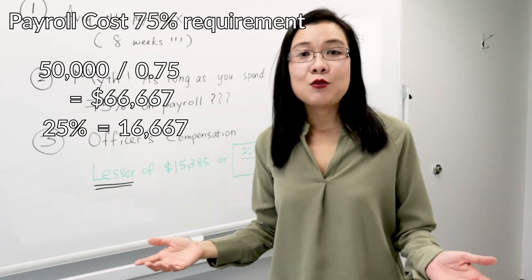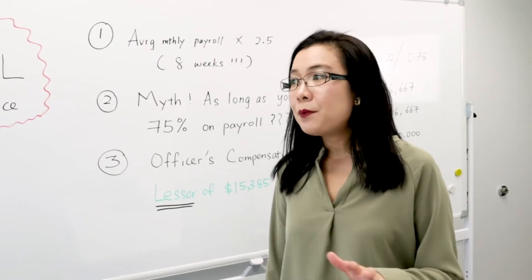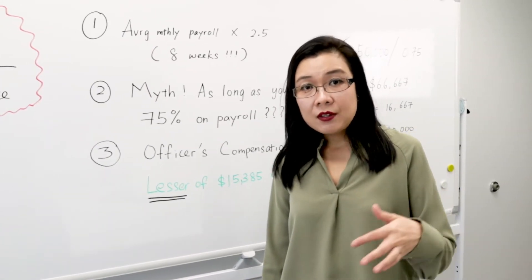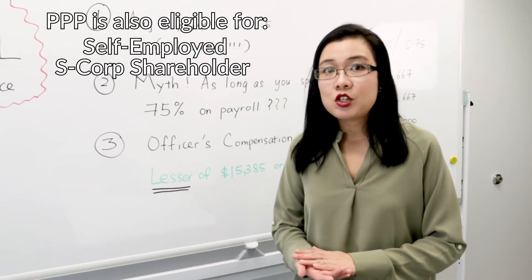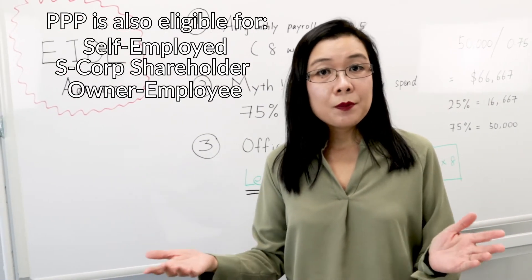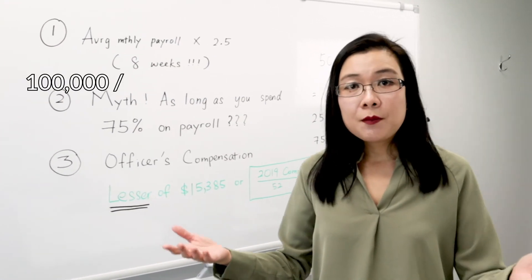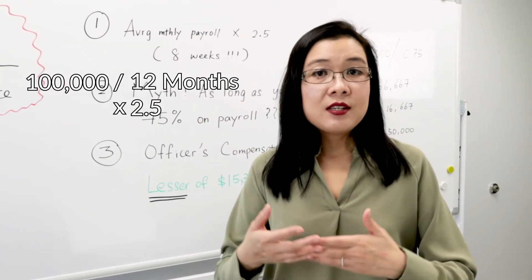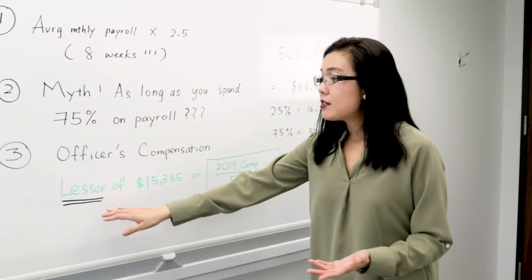Perhaps the third point I'm gonna talk to you about is the most confusing point. We know that PPP funds is not only awarded for employers with employees. Now if you're self-employed, if you're S corporation shareholder, if you're an owner employee, you are also eligible to apply for PPP. And here's a problem: before, everybody thought that it's $100k divided by 12 months times 2.5. Apparently SBA has already decided and have already published the guideline, and the guideline is it is the lesser of $15,385.